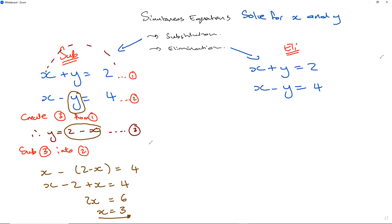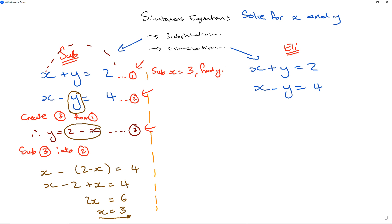Therefore x equals 3. Now I need the corresponding y value. I substitute x equals 3 into equation 3, since y is already the subject there. That gives y equals 2 minus 3, so y equals negative 1.